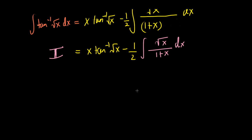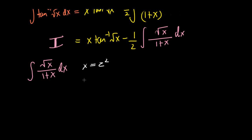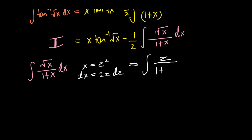I'll call this remaining integral I. We want to find I = ∫ √x/(1+x) dx. This uses a classic u-substitution. I'm going to substitute x = z², so dx = 2z dz. Substituting in, the square root of z² is just z, giving us I = ∫ z/(1+z²) · 2z dz, which equals 2 times the integral of z²/(1+z²) dz.